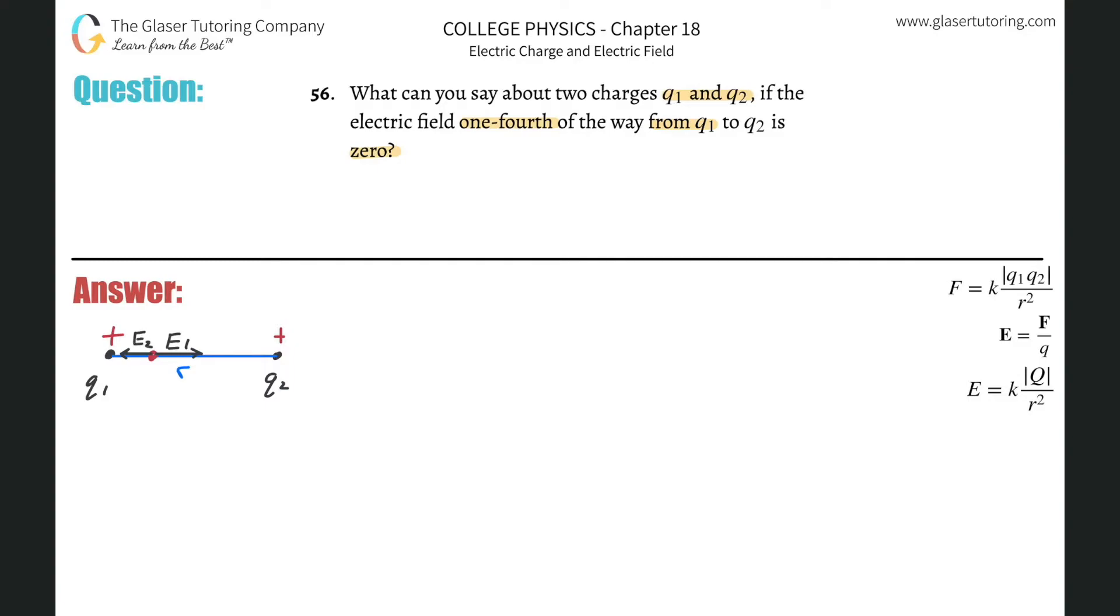All right, so what I realized is that when I take e sub 1, I'm going to take pointing to the right to be positive, then pointing to the left has to be negative. So e sub 1 minus e sub 2, the electric field produced by charge number 2 should be equal to what? Well, equal to zero, because that's what they're telling us. It says, what can you say about the charges if the electric field one-fourth of the way, blah, blah, blah, is zero? So the net electric field is zero. So when I sum these two vectors up, it better be zero.